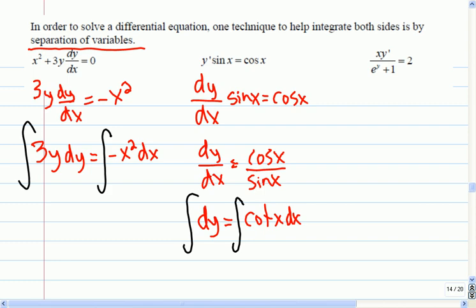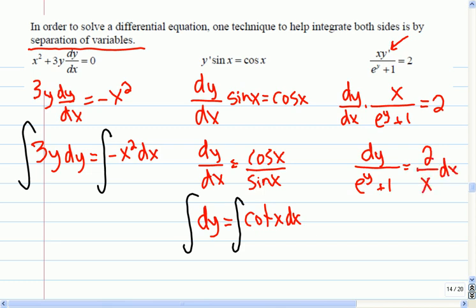Okay, so the next one, same thing. I would start by switching that so that I know where I'm going to be moving things. So it's going to be times x over e to the y plus 1 equals 2. And now what I'd like to do is I'd like to get rid of this x here on top, and I'd like to move dx over to the other side. So if I do that, so x goes down here and dx comes up, and that's where I'd be separated my variables. Okay, any questions so far on separation? Good.